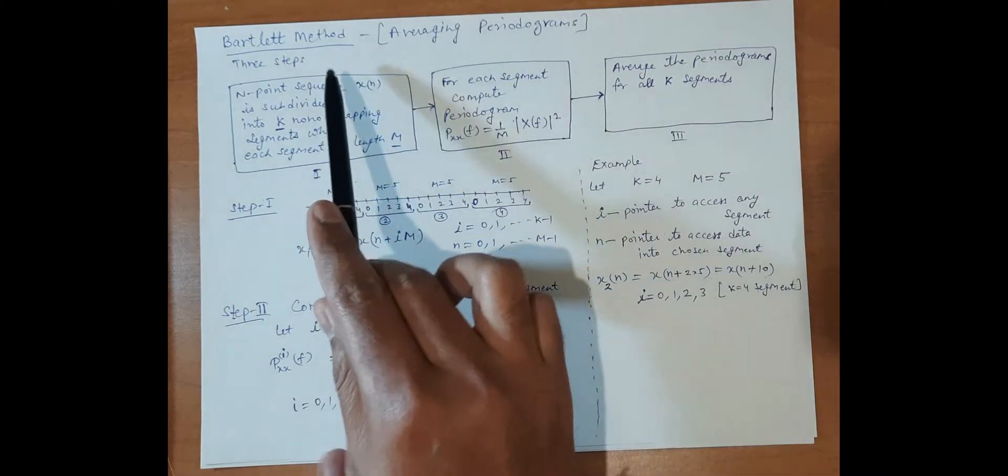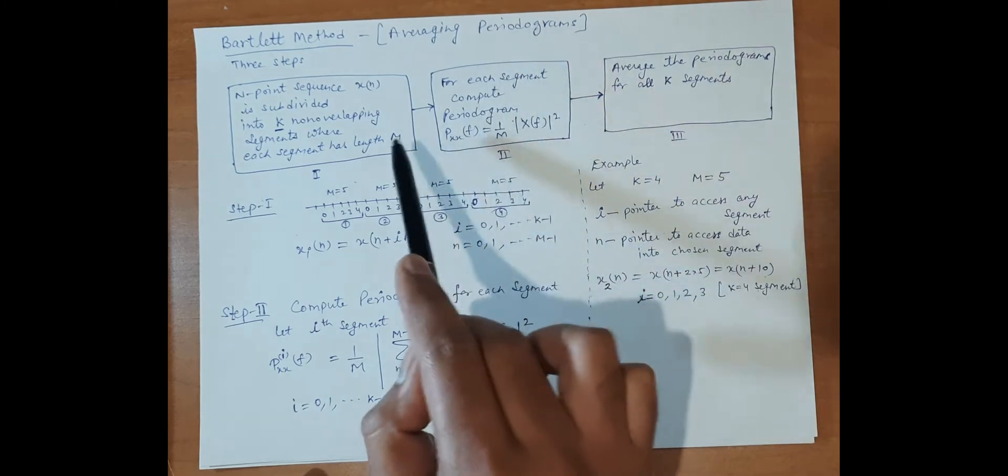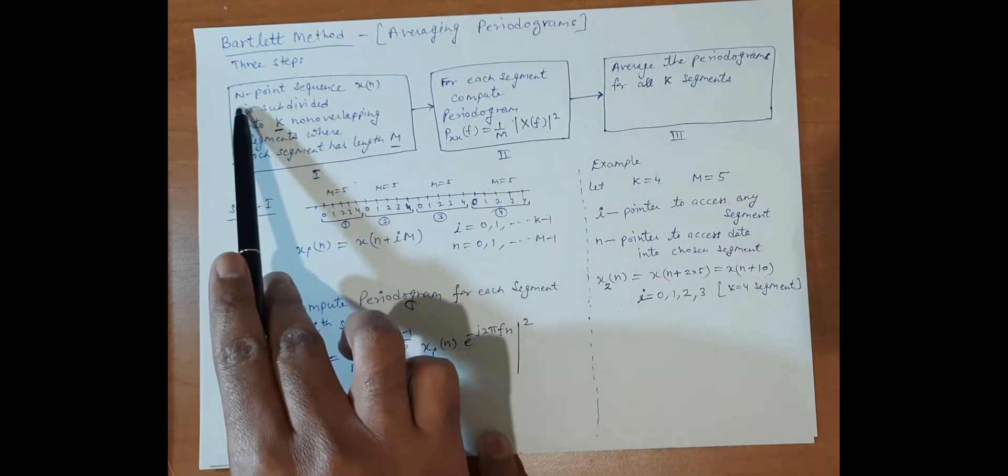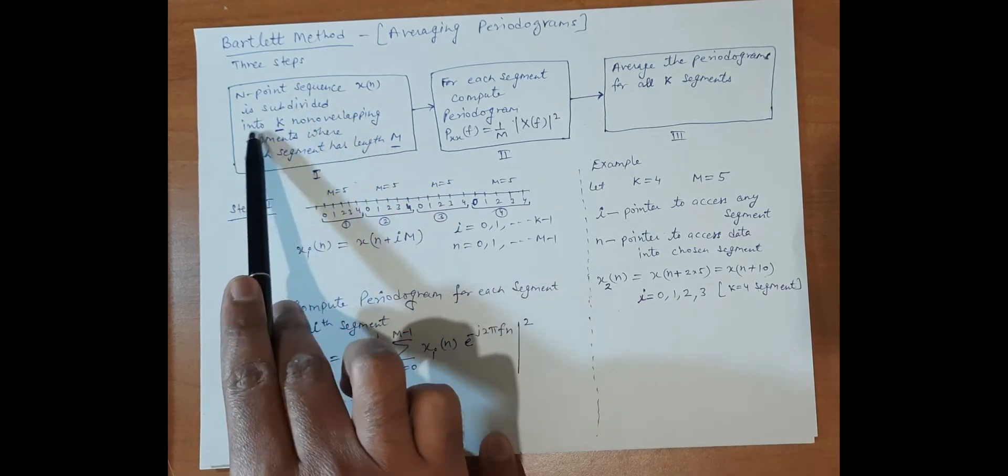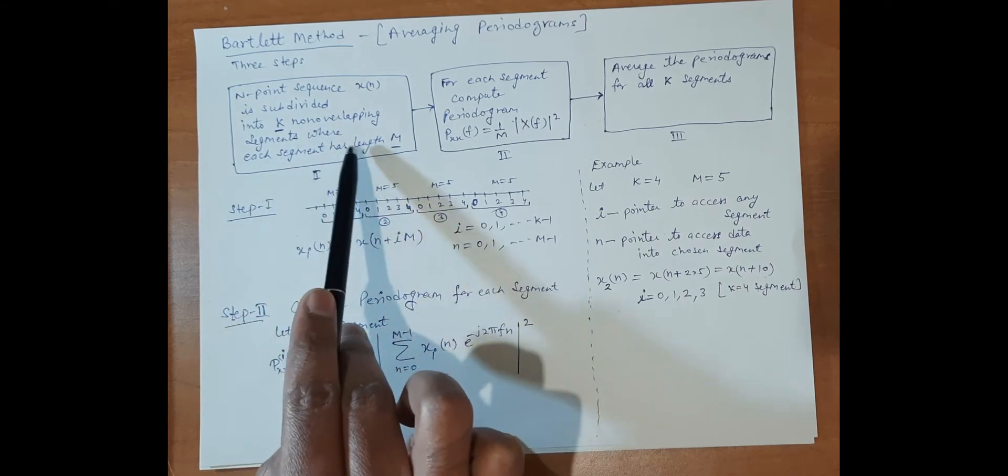The Bartlett method is an averaging periodogram method. It is a three-step method in which an n-point sequence x(n) is subdivided into k non-overlapping segments, where each segment has length m.